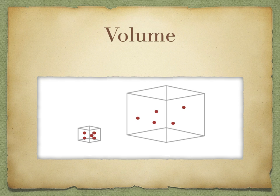Finally, volume is straightforward: it's the amount of space that objects have to move around in. In a smaller volume, objects have less freedom of movement, whereas in a larger volume there is much more. Those are your three kinetic variables with respect to the kinetic theory of gases.